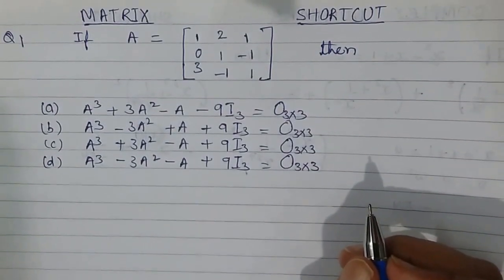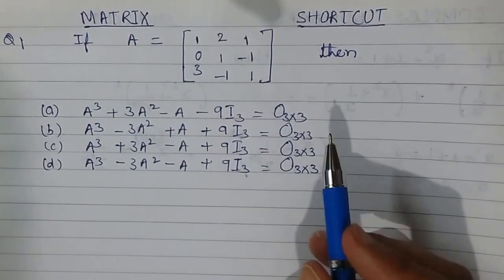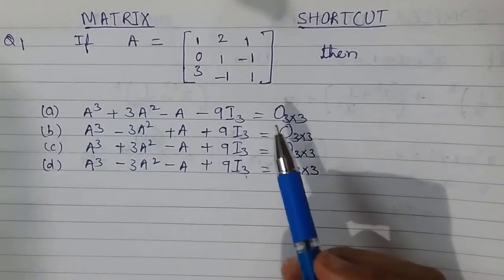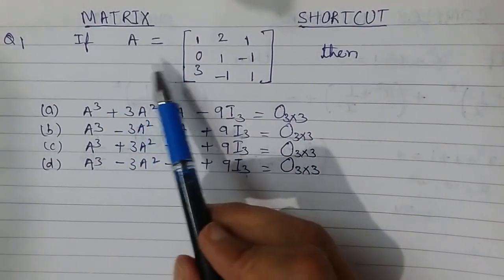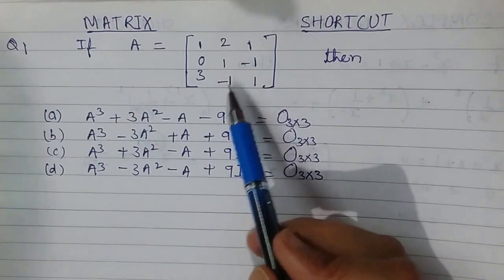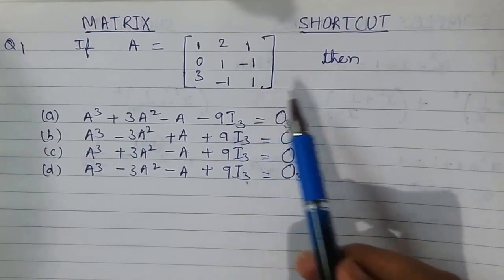Hello friends, in this video I am here with another question on matrix. This is my question—it came in the exam. If A is equal to the matrix [1, 0, 3; 2, 1, -1; 1, -1, 1], then which one of the following options is correct?